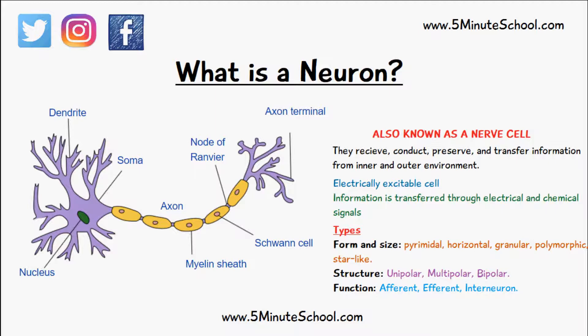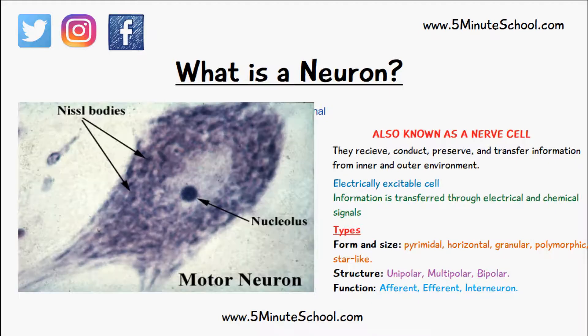What's contained inside a neuron or a nerve cell is very similar to other cells. The soma will have a nucleus and a cytoplasm. The difference is they contain something called Nissl bodies, which are like aggregations of rough endoplasmic reticulum.